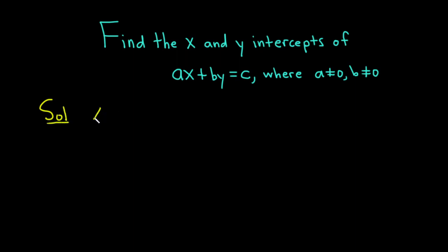Let's start by looking for the x-intercept. To find any intercept, you set the other variable equal to zero. So to find the x-intercept, we set y equal to zero. To find the y-intercept, we set x equal to zero.